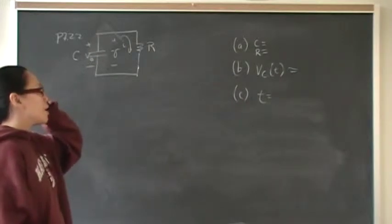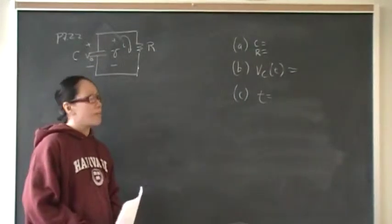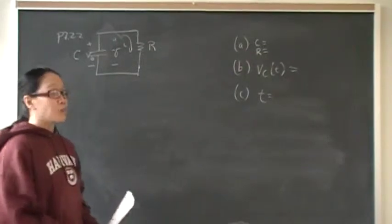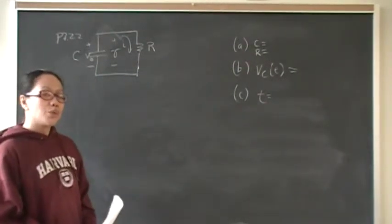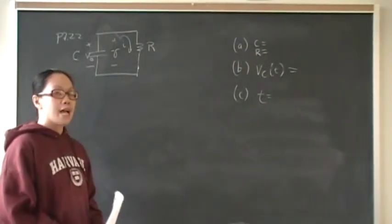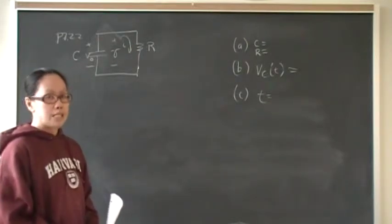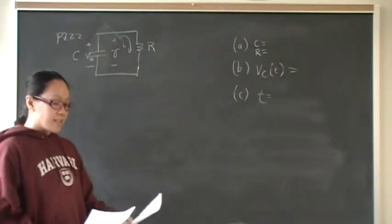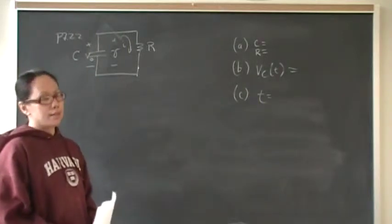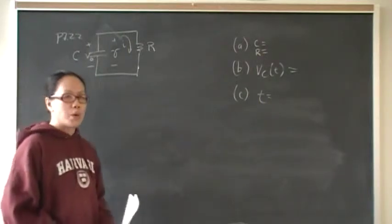For Part B we're finding the general equation of voltage across the capacitor for all time. To do that you have to remember that at time zero a capacitor in DC has the full charge of the DC voltage source. And in Part B they tell you what that voltage source is that they want you to write the general equation for.